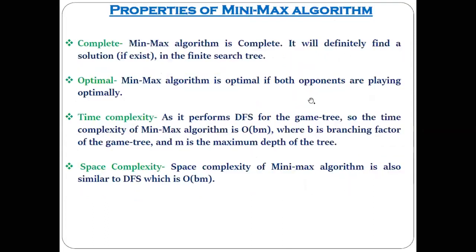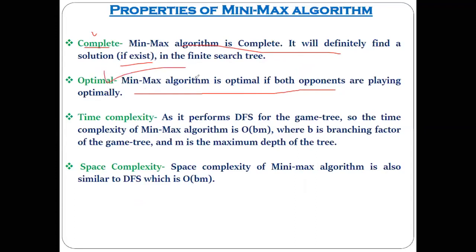The min-max algorithm has some properties and drawbacks. Properties: it is complete — min-max will definitely give a solution if one exists. It is optimal — if both players are very intelligent, we get the best solution. Time complexity is the same as DFS since we are utilizing DFS. Space complexity is also the same as DFS.